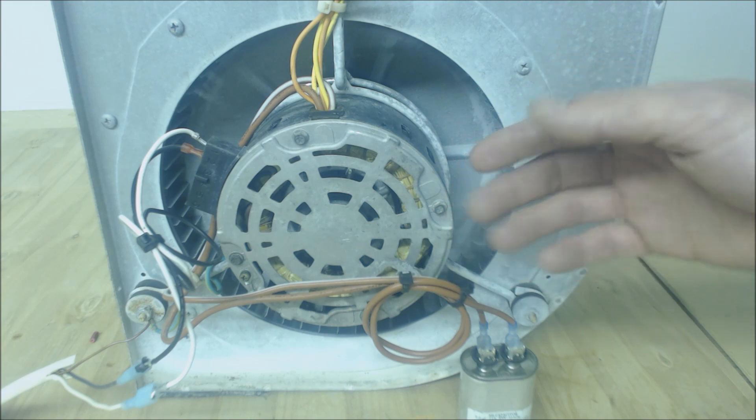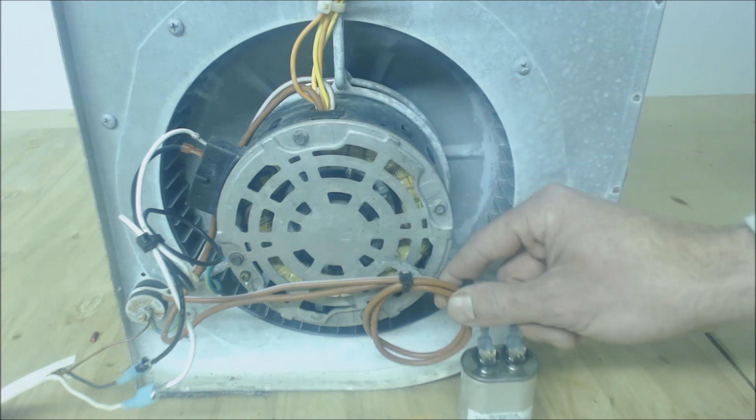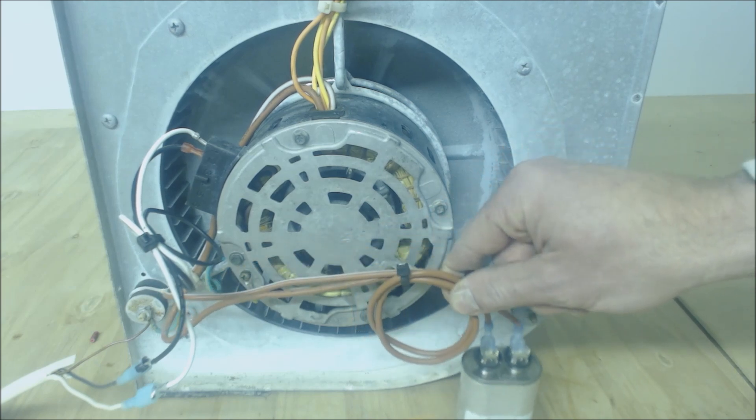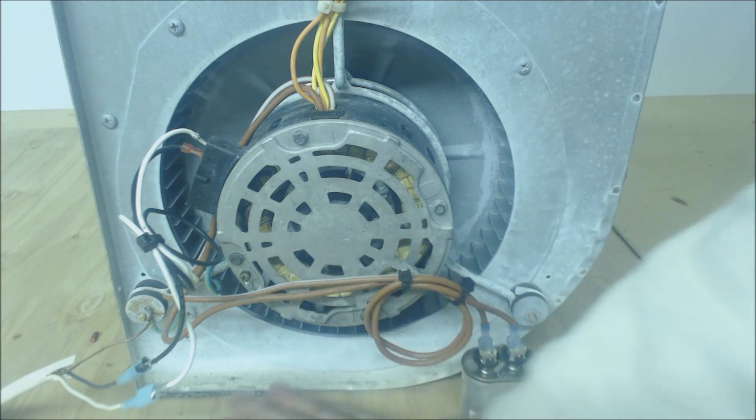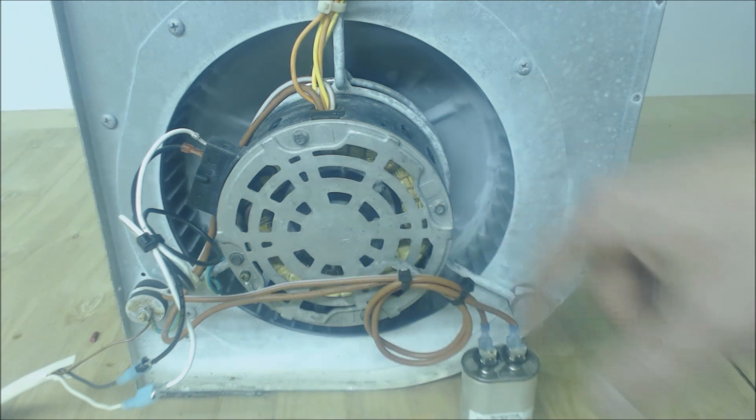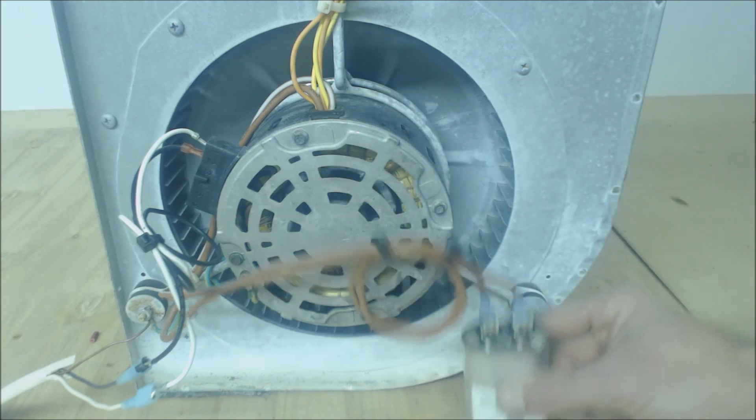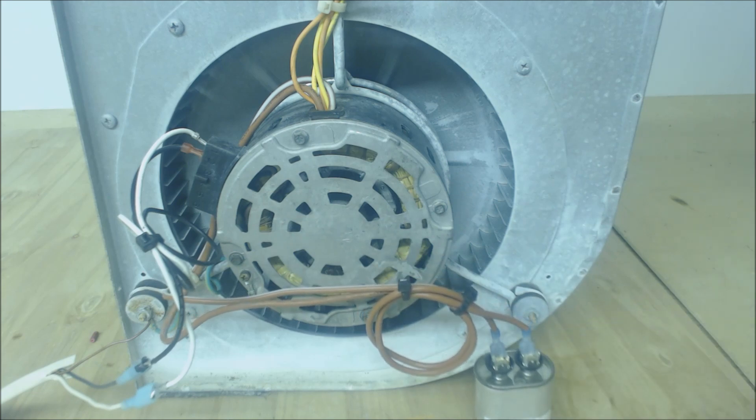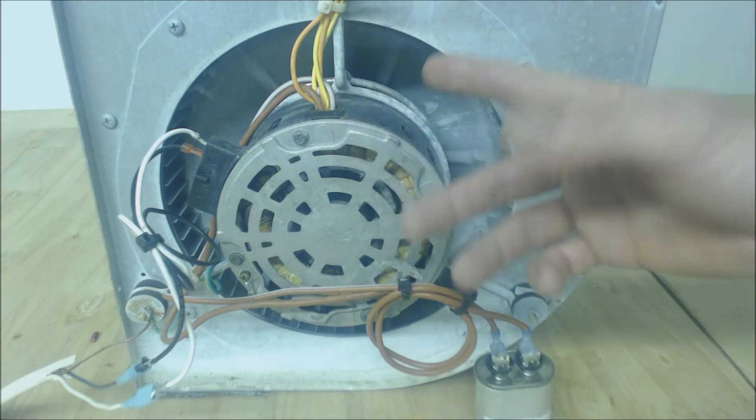We're going to go over that in this video. We're going to run this little experiment. The start winding is bad on this blower motor because there was literally water in the bottom of this blower motor, stopped the wheel from turning right here, and that's why this motor failed.